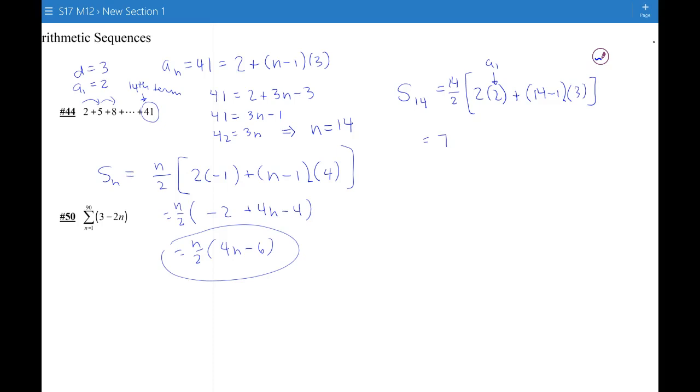So I'm going to be able to find this sum, 7 times 4 plus 39, 13 times 3. So this is 7 times 43, looks like 301. So if you add the first 14 terms of this series, it adds up to 301.